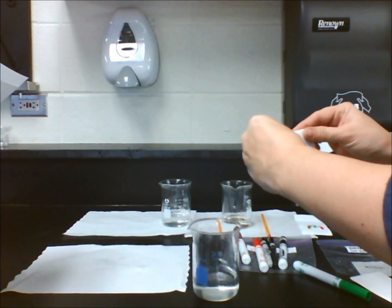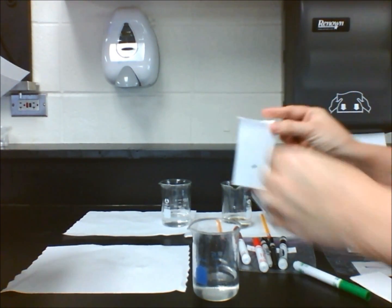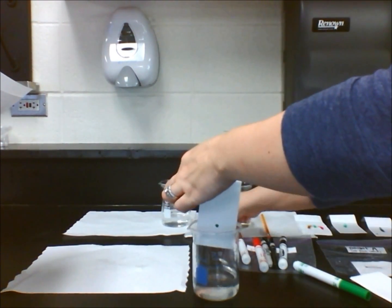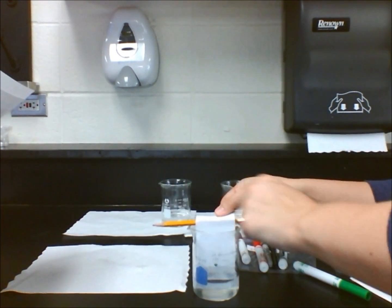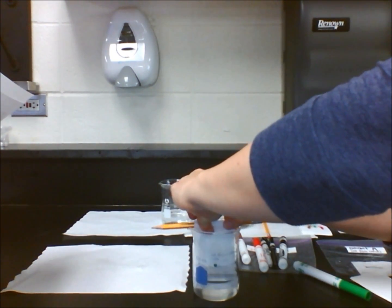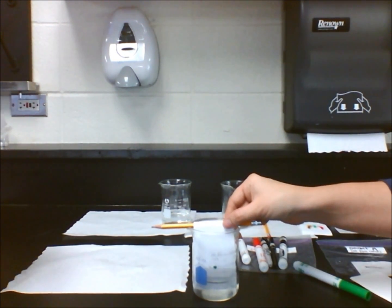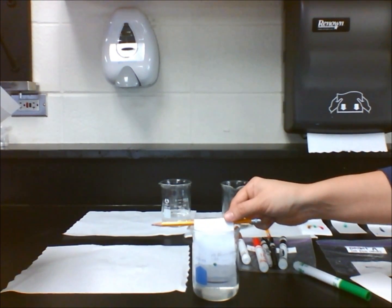Fold over the paper about 3 cm from the top. Rest a pencil across the top of the beaker containing the water. Hang the paper on the pencil so that it touches the water. Make sure the spot of ink is above the surface of the water.